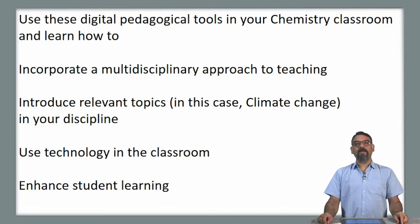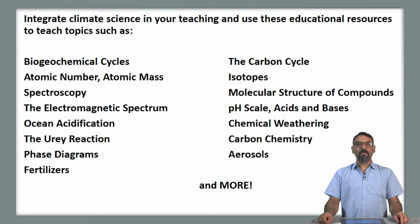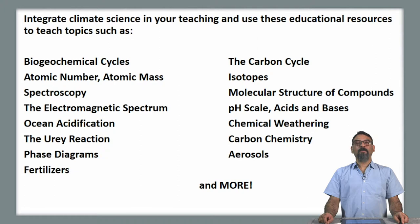How do I effectively use technology in the classroom to better engage with my students and how do I enhance student learning? You can integrate climate science in your chemistry teaching and use the educational resources we will present to teach topics in the chemistry undergraduate syllabus. These topics include biogeochemical cycles, the carbon cycle, atomic number and atomic mass, isotopes and isotopic compositions, spectroscopy, the molecular structure of compounds, and the electromagnetic spectrum.